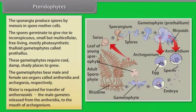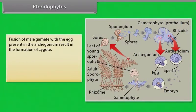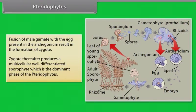Water is required for transfer of antherozoids, the male gametes released from the antheridia, to the mouth of archegonium. Fusion of male gamete with the egg present in the archegonium result in the formation of zygote. Zygote thereafter produces a multicellular, well-differentiated sporophyte which is the dominant phase of the pteridophytes.